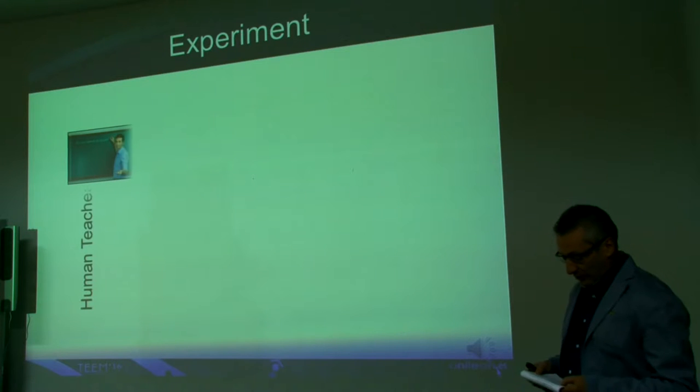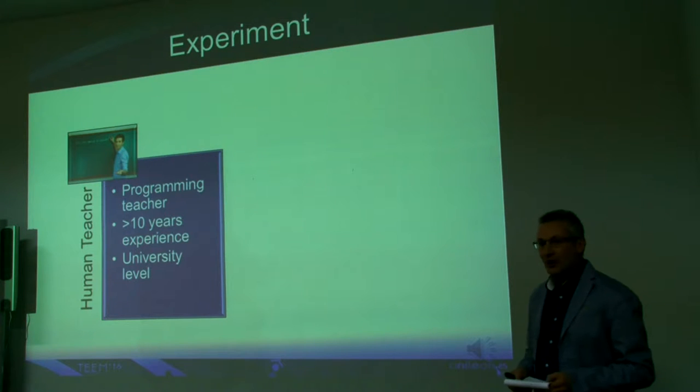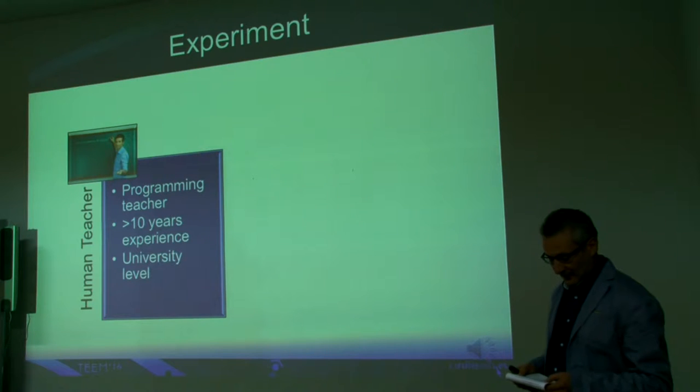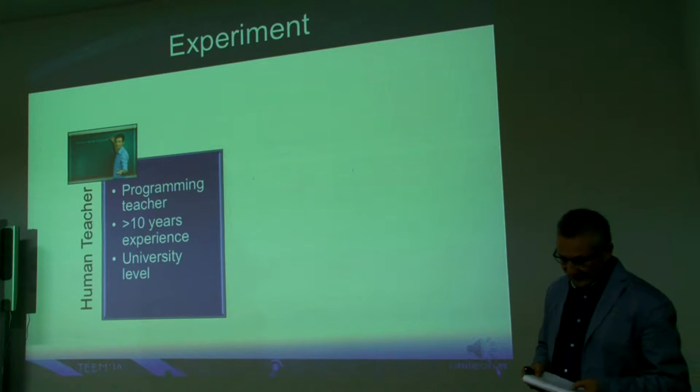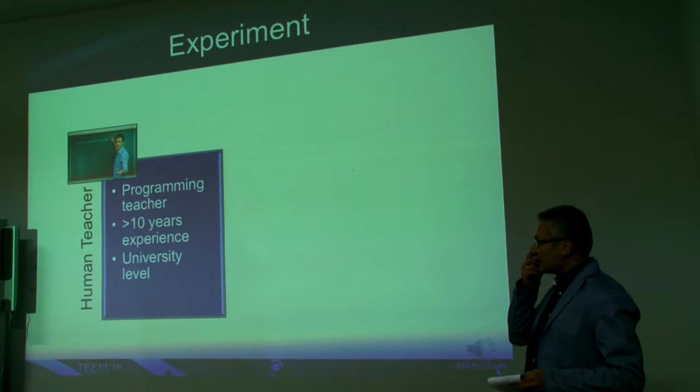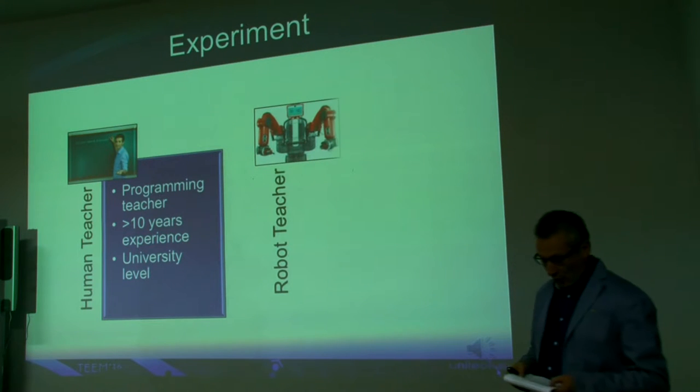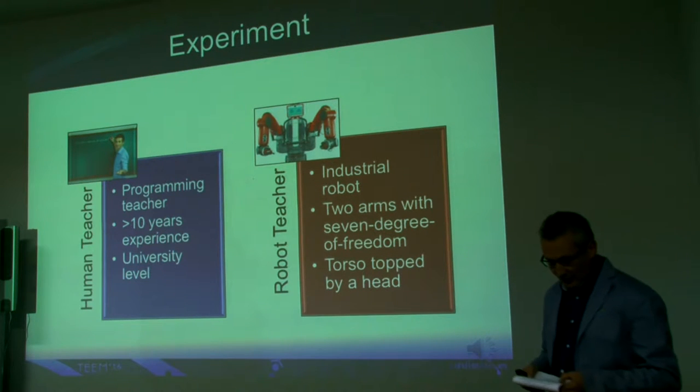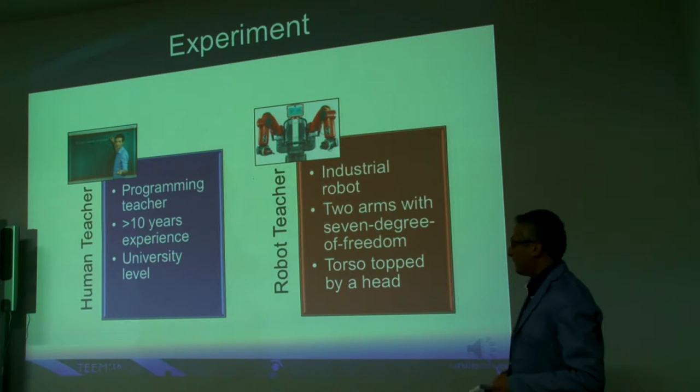In order to evaluate the student attitude towards robots, we designed an experiment where the same computational concepts are taught by a robot and by a human teacher. The human teacher was a programming teacher with more than 10 years of experience in programming courses at university level. The robot teacher was an industrial robot that consists of two 7 degree of freedom arms attached to a torso topped by a head made up by a display.